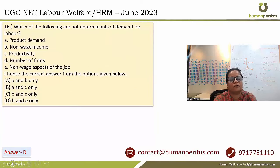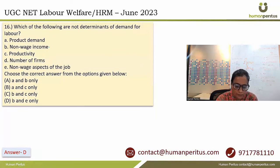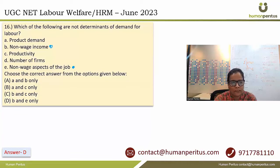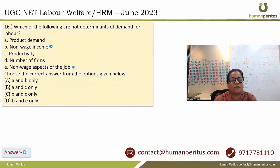Which of the following are not determinants of demand for labour? Option B and option E are not determinants of demand for labour — they are actually determinants of supply of labour. Non-wage income is any income earned other than through wages, and non-wage aspects may include job satisfaction or quality of working conditions. Rest of the options are determinants of demand. Answer is B and E, that is option T.